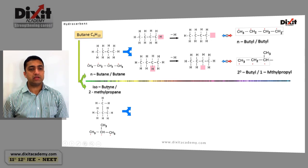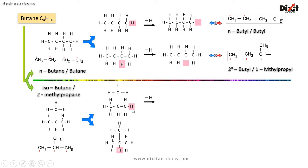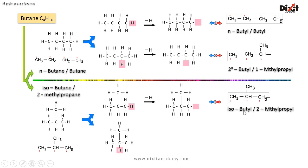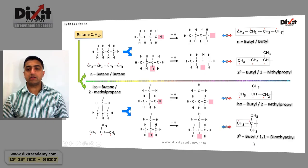The other isomer of butane is isobutane, called 2-methylpropane in the IUPAC system. Isobutane has two types of carbon atoms: the terminal carbon atoms are primary and the middle carbon atom is tertiary. If we remove a hydrogen from a primary carbon atom, we get the isobutyl group, called 2-methylpropyl in the IUPAC system, with the unsatisfied valency on a primary carbon atom. If we remove a hydrogen from the tertiary carbon atom, we get the tertiary butyl group, called 1,1-dimethylethyl in the IUPAC system, with the unsatisfied valency on the tertiary carbon atom.